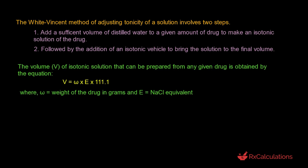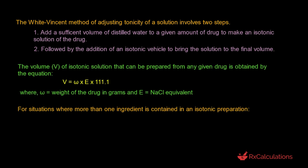This equation is for scenarios where you only have one ingredient in your preparation. When you have more than one ingredient, the equation becomes V equals, in parentheses, Omega-1 times E1 plus Omega-2 times E2, all the way to Omega-n times En, all multiplied by 111.1. So if you have three ingredients, you end up with Omega-3 times E3 as the final term, then multiply everything by 111.1.